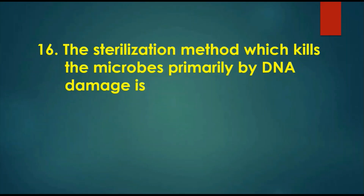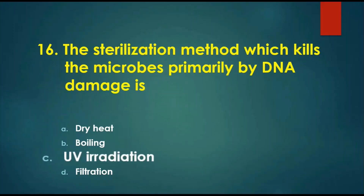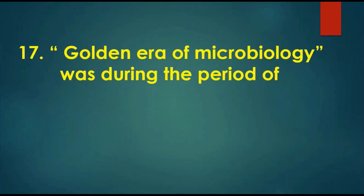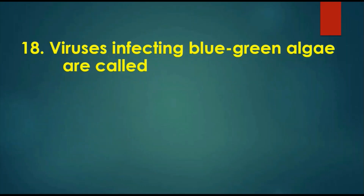Question 16: The sterilization method which kills microbes primarily by DNA damage — options are: A) dry heat, B) boiling, C) UV irradiation, D) filtration. The answer is UV irradiation, which causes DNA damage. Question 17: The golden era of microbiology was during the period — options are: A) 1880 to 1920, B) 1800 to 1850, C) 1925 to 1980, D) 1755 to 1800. The answer is 1880 to 1920, when Louis Pasteur, Edward Jenner, Robert Koch, and others made their landmark contributions.